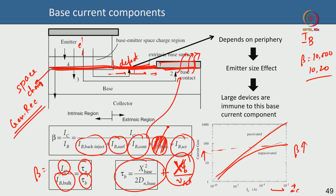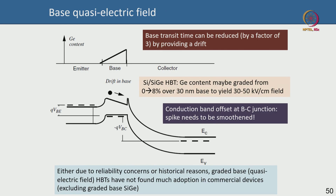Large devices are immune to the surface base current component because you need a large area-to-perimeter ratio. If you have a very small area the perimeter is large, then sidewall leakage and surface leakage can be large. That is why you need a large area-to-perimeter ratio to minimize the surface current — but that will increase the capacitance, so it is a conflicting requirement.